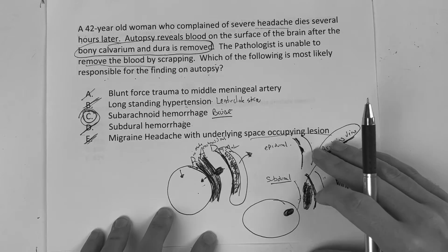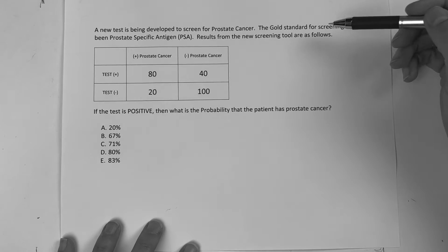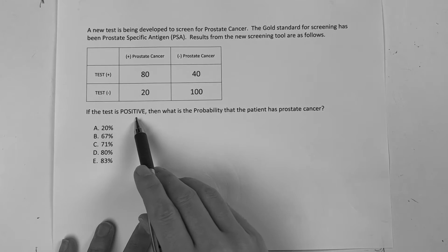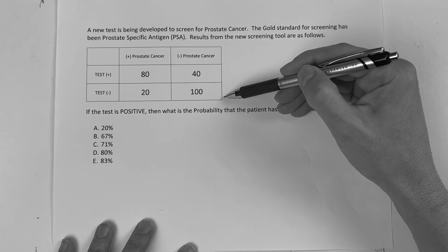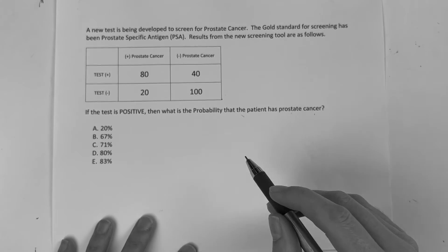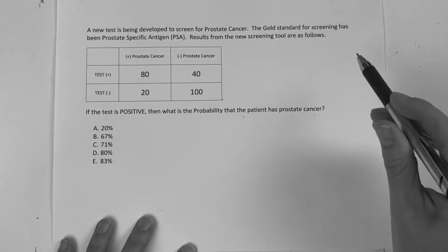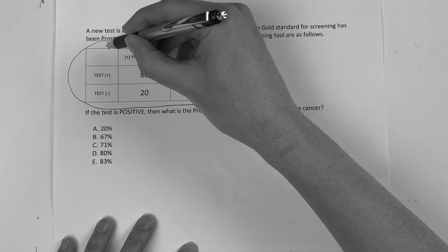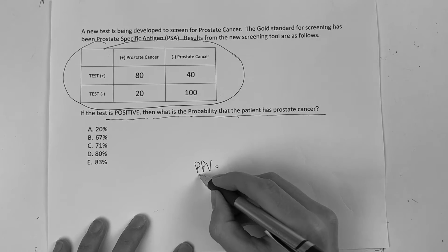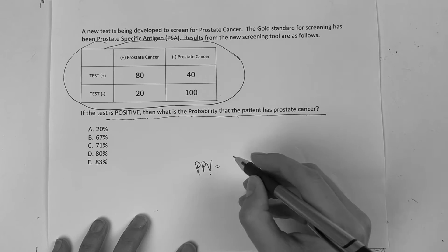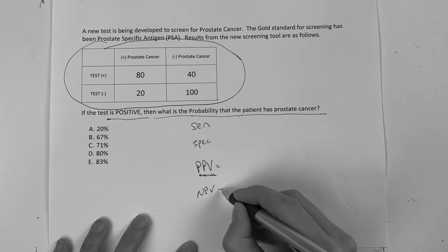Despite all this neurology, you can't lose the biostats — that's our bread and butter. The question: if the test is positive, what is the probability that the patient has prostate cancer? A new test is being developed to screen for prostate cancer with PSA as the gold standard. Anytime you see a two-by-two table, you need to know sensitivity, specificity, positive predictive value, and negative predictive value.